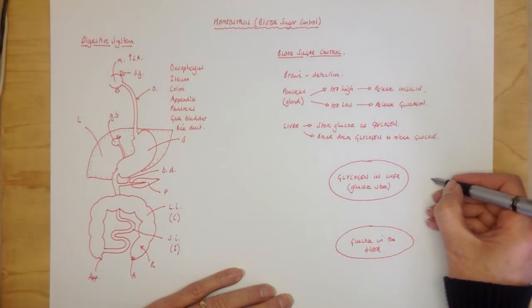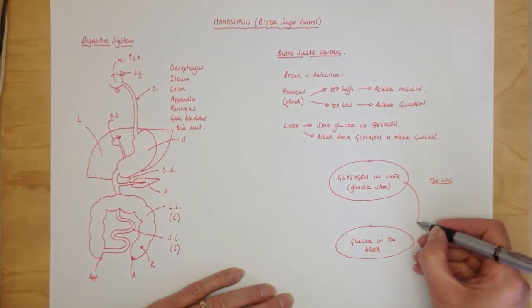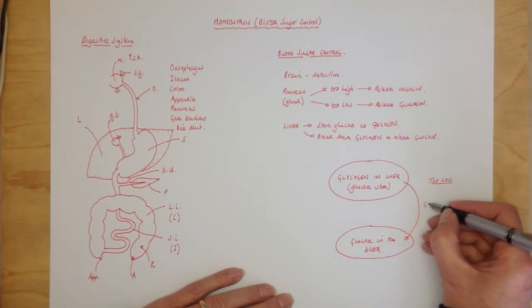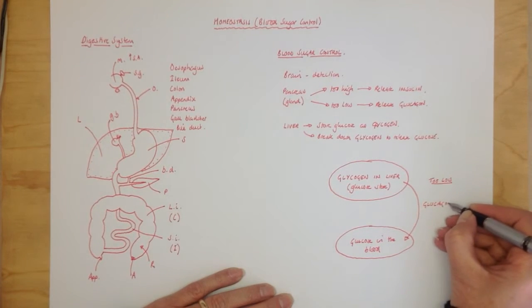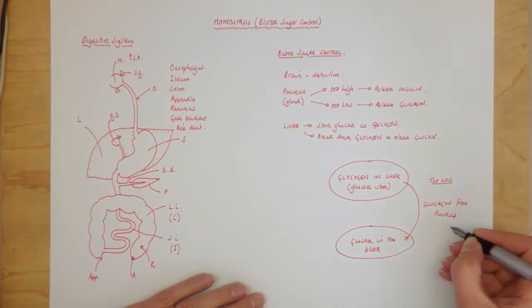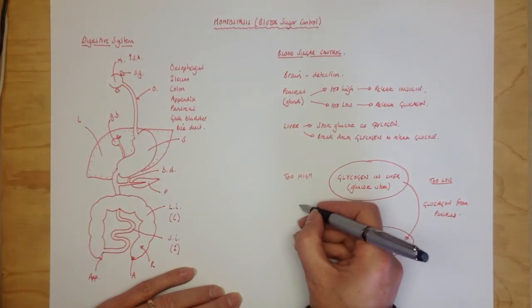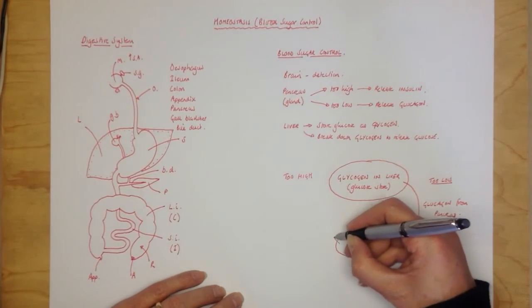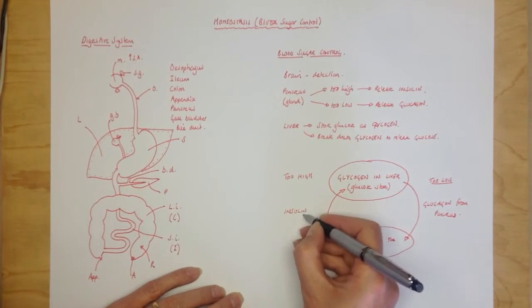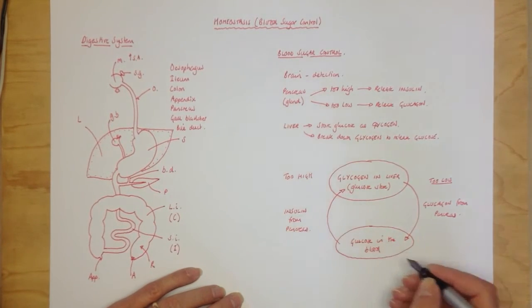Now if your blood sugar level is too low, the pancreas releases glucagon. Insulin - if your blood sugar levels are too high, the pancreas releases insulin. The brain tells them to do this.